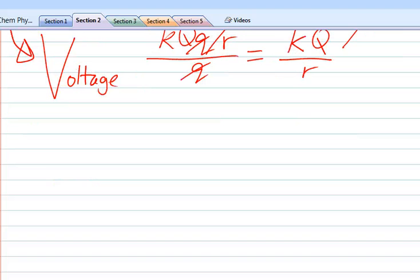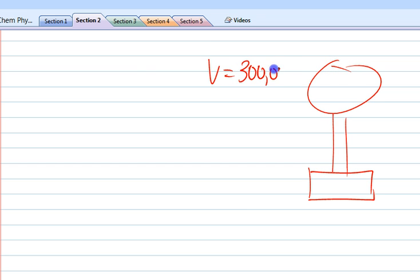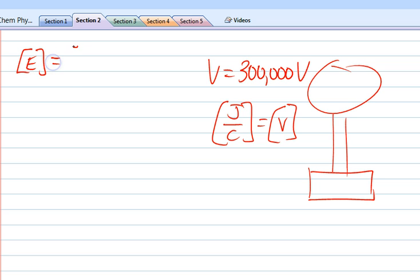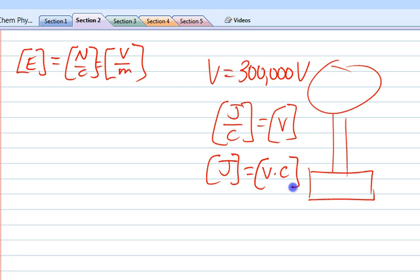So let me give you a couple of examples. The Van de Graaff generator produces a voltage of 300,000 volts. And so the weird thing is that a joules per coulomb is also called a volt.